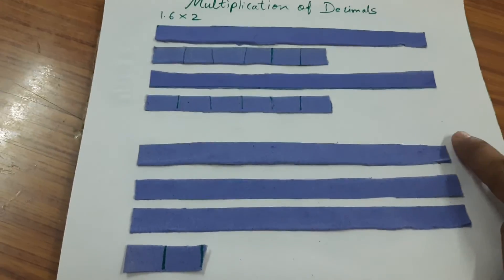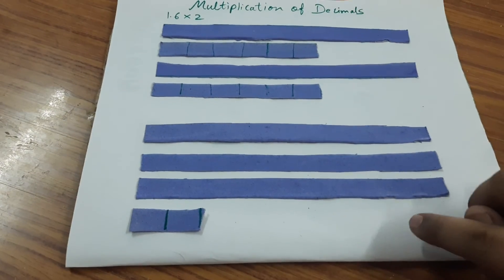So the answer will be 1, 2, 3 and 0.2, which is 3.2.